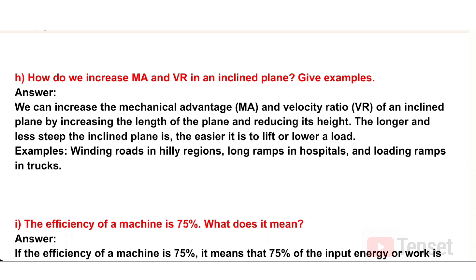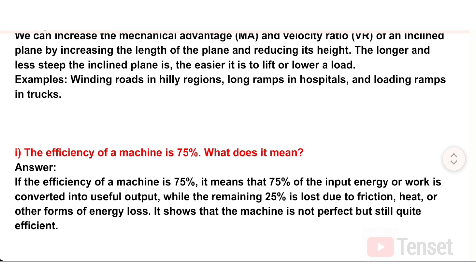H) How do we increase MA and VR in an inclined plane? Answer: We can increase the mechanical advantage and velocity ratio of an inclined plane by increasing the length of the plane and reducing its height. The longer and less steep the inclined plane, the easier it is to lift or lower a load. Examples: winding roads in hilly regions, long ramps in hospitals, and loading ramps in trucks.